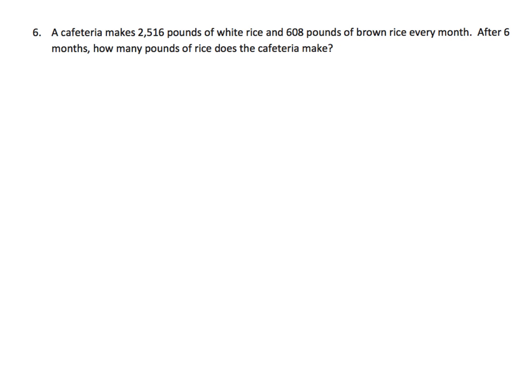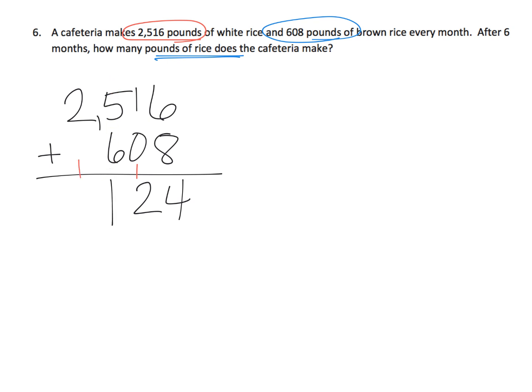And the last problem for this video, I chose this one because it's kind of tricky. Cafeteria makes 2,516 pounds of white rice, 608 pounds of brown rice, and after 6 months, how many pounds of rice did the cafeteria make? So the first thing we're going to have to do is add 2,516 plus 608. Adding the ones, we get 14, carry the 1. Adding the tens, we get 2. Adding the hundreds, we get 11, carry the 1. And then adding the thousands, we get 3. So that's 3,124 pounds of rice every month.